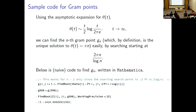To find the next zero, you move to the next gram interval. Note that gram interval widths decay with t like 1/log t.